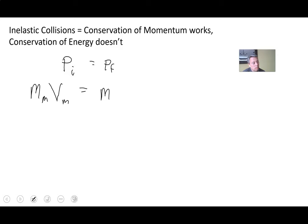So we're going to have marker plus box times velocity of the marker, plus the box. Now that's our conservation of momentum.